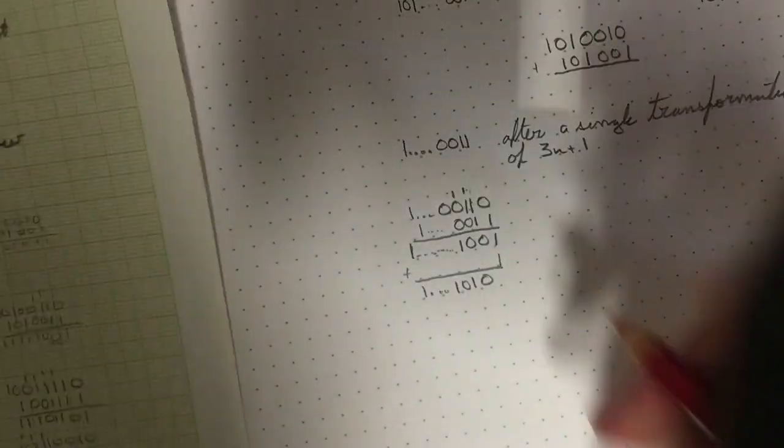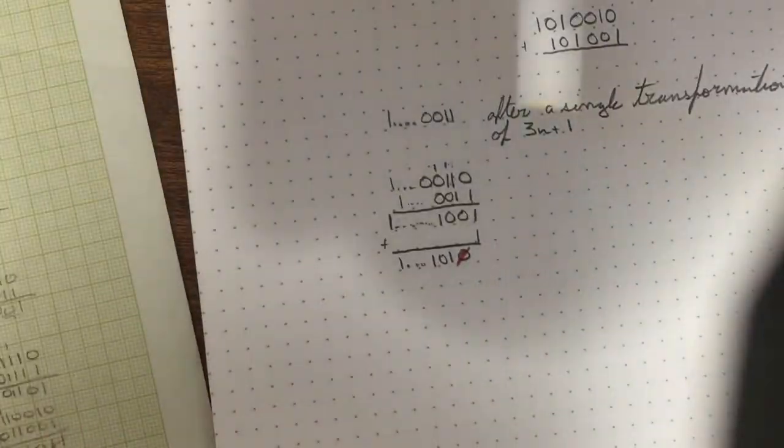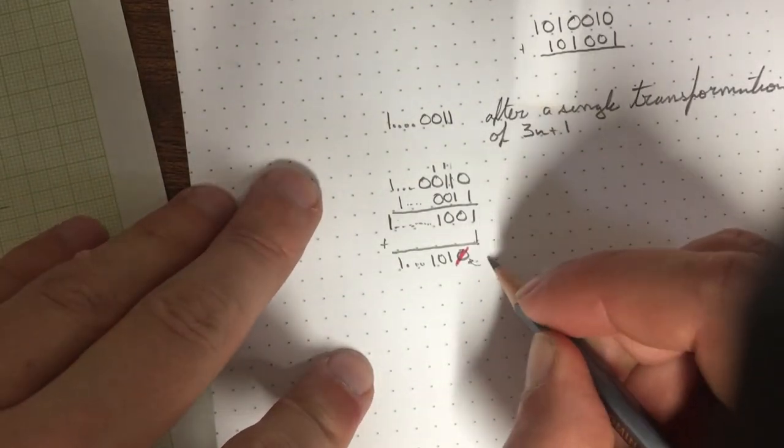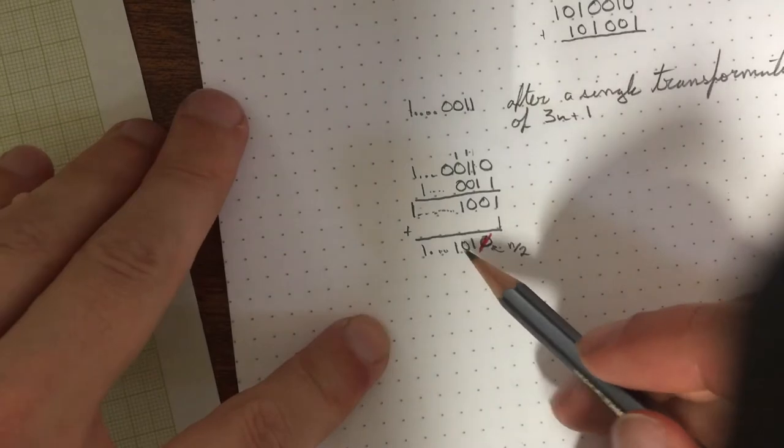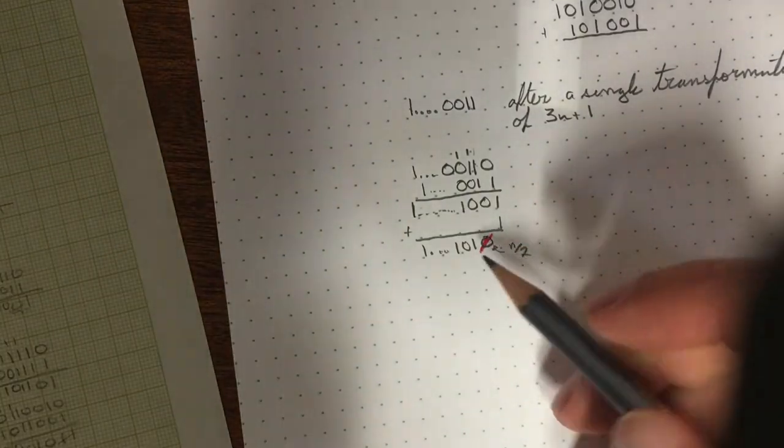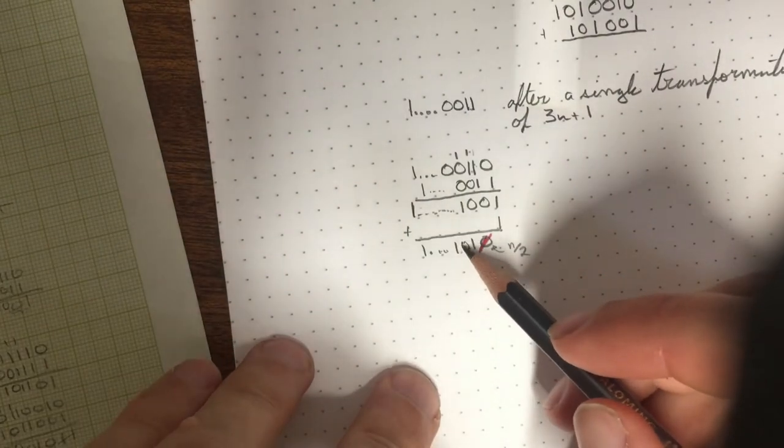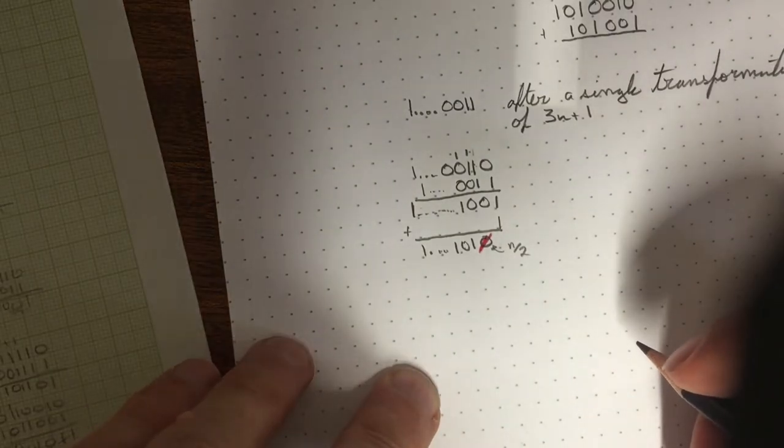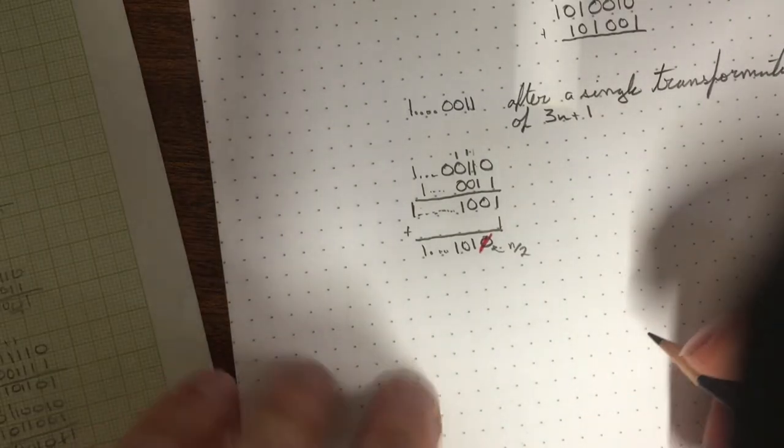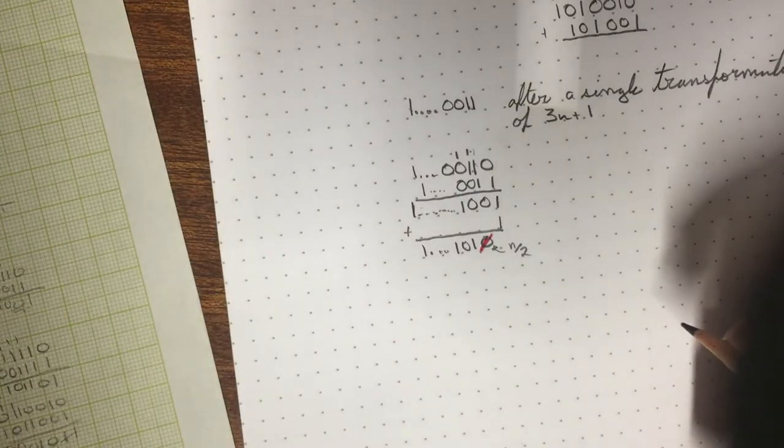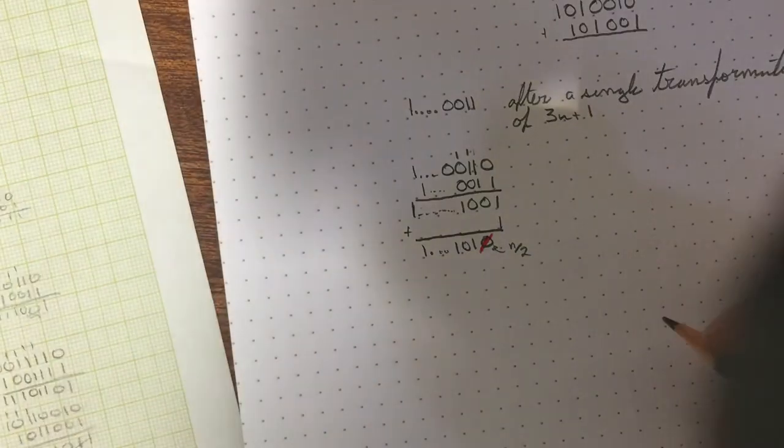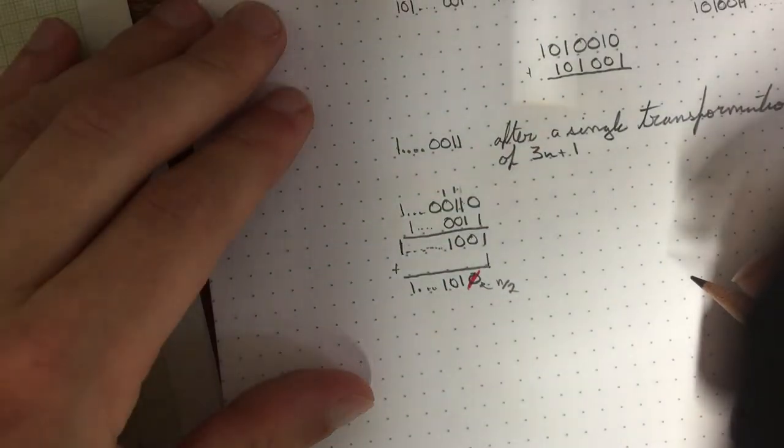We're going to strike off that lower end zero with our n over two. And then we've got a class here that after a single odd Collatz step is this one, zero, one pattern, which we know for any odd binary number reduces under the Collatz conjecture.